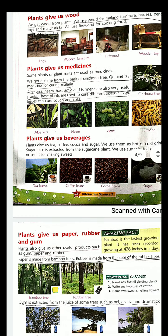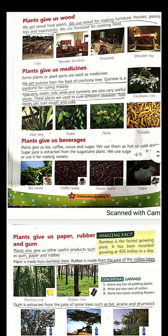Then plants give us beverages - things like cocoa beans, tea leaves, cocoa from which chocolate is made, and sugar from sugarcane.